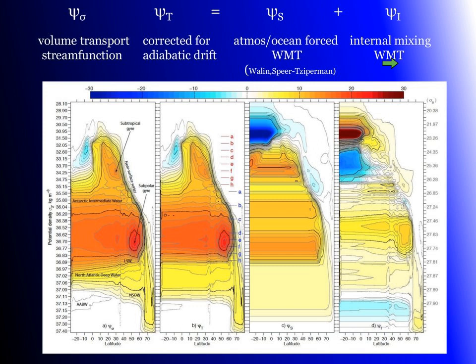The surface-forced transformation is all in the mixed layer, so these are horizontal streamlines beneath the mixed layer, and the difference is internal mixing. Notice that in the subpolar overturning cell, there's a return at around 40 to 50 degrees north, which is a transition zone between the two gyres — the subtropics and the subpolar region — where the North Atlantic Current is supplied by the Gulf Stream. That's a very interesting region, and we'll talk about the return internal mixed cells in the subtropics.